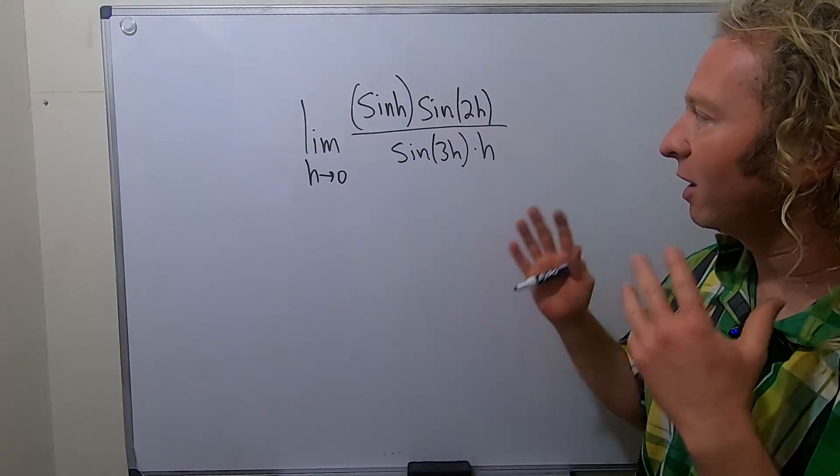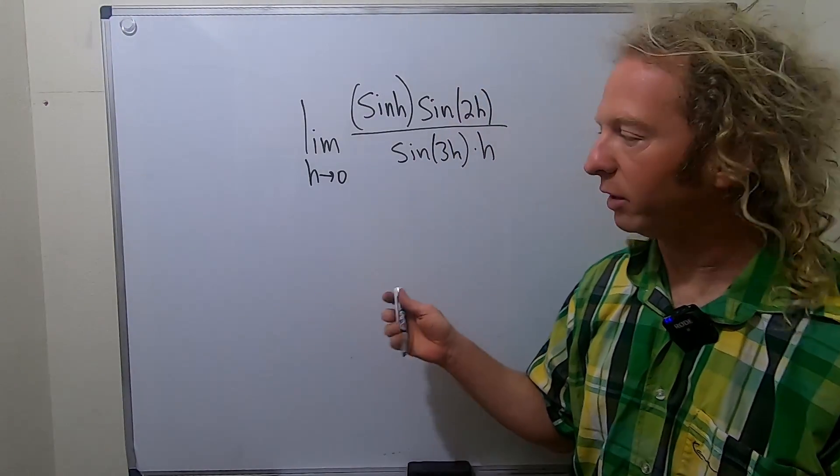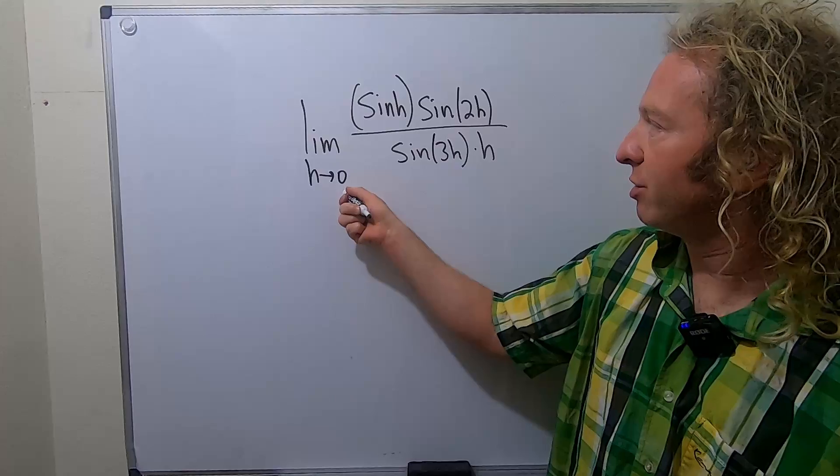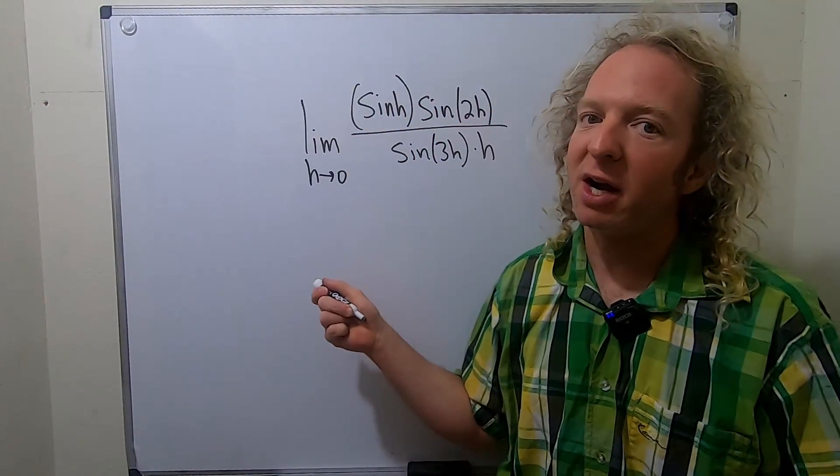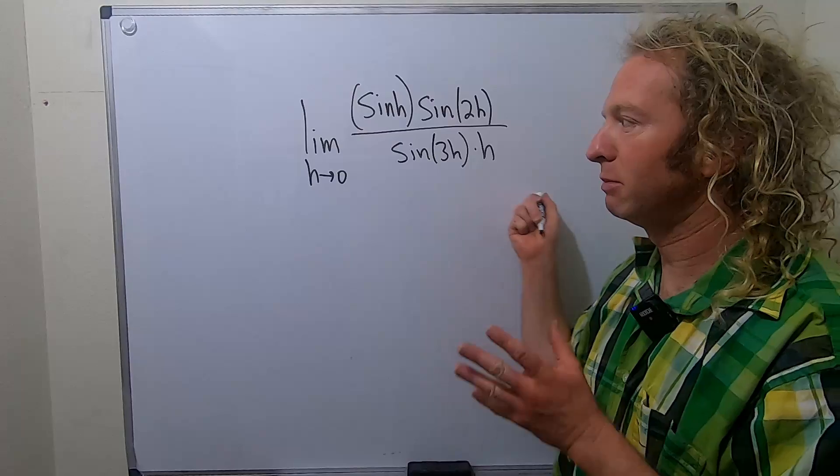Hi everyone, in this video we're going to evaluate this limit. So we're going to compute the limit as h approaches 0 of the sine of h times the sine of 2h all divided by the sine of 3h times h.